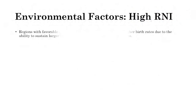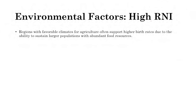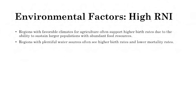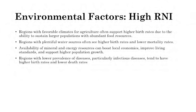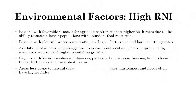Environmental factors impacting high population growth: regions with favorable climates for agriculture can sustain larger populations with abundant food resources — the first cities developed thousands of years ago because of agricultural surplus. Regions with plentiful water resources often see higher birth rates and lower mortality rates. Availability of minerals and natural energy resources can boost local economies, improve living standards, and support higher population growth. Regions with low prevalence of infectious diseases tend to have higher birth rates and lower death rates. Areas less prone to natural disasters generally have higher natural increase rates.